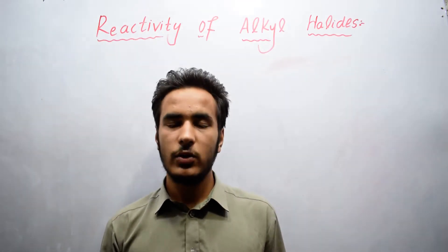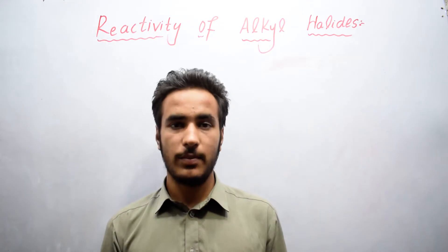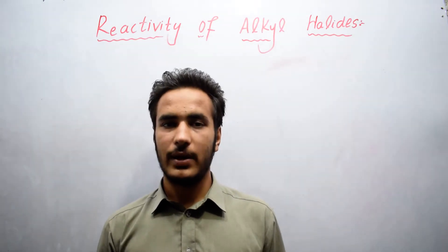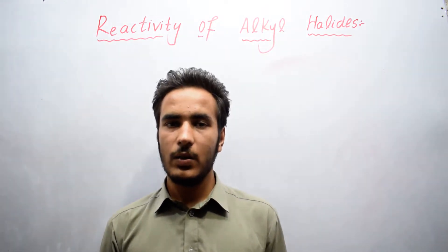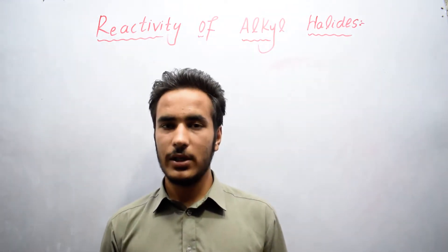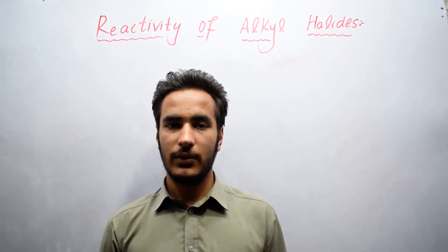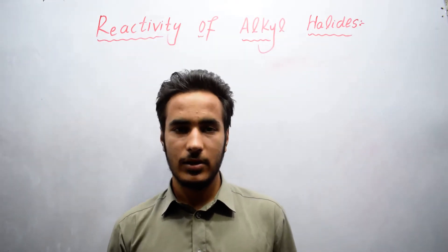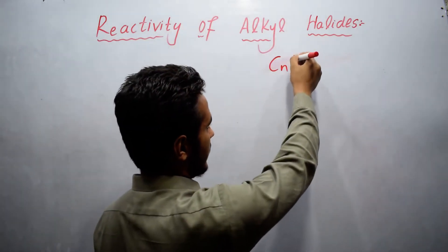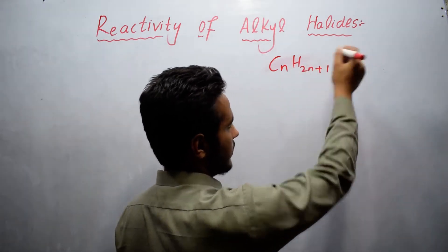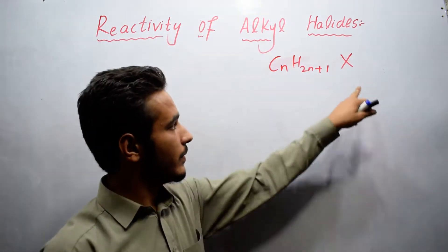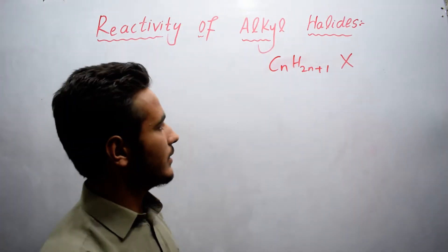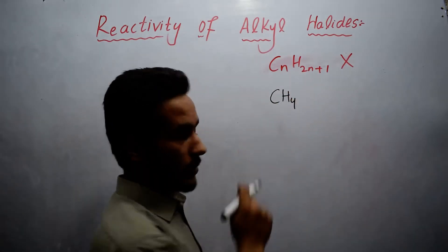When one hydrogen is replaced by a halogen atom in an organic compound, such a compound is known as an alkyl halide. Alkyl halides are derivatives of alkanes where one hydrogen is replaced by a halogen — which may be chlorine, fluorine, bromine, or iodine. The general formula for alkyl halides is CₙH₂ₙ₊₁X, where X represents the halogen atom, which is the functional group.